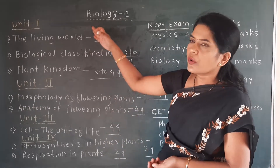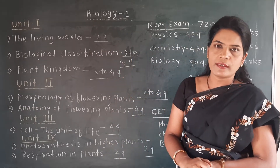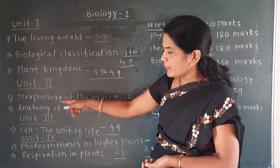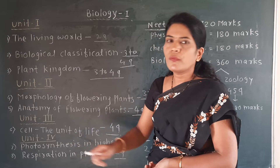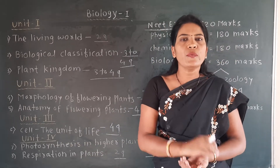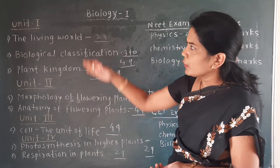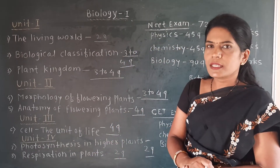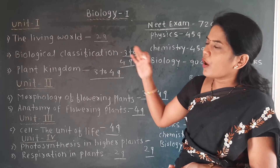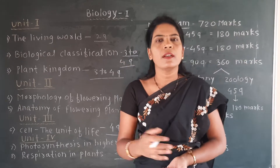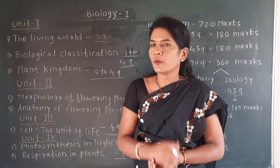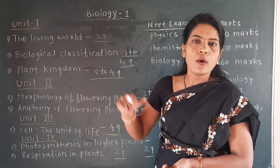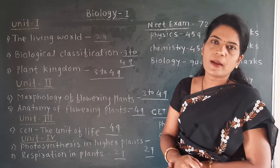Now we are going to discuss the syllabus of our subject for the botany section, or Biology 1. Overall, we have to study 4 units — Unit 1, Unit 2, Unit 3, and Unit 4 — and these 4 units include a total of 8 chapters. Here we will take a revision of the chapter list, looking at which points we are going to discuss and the depth of each chapter.